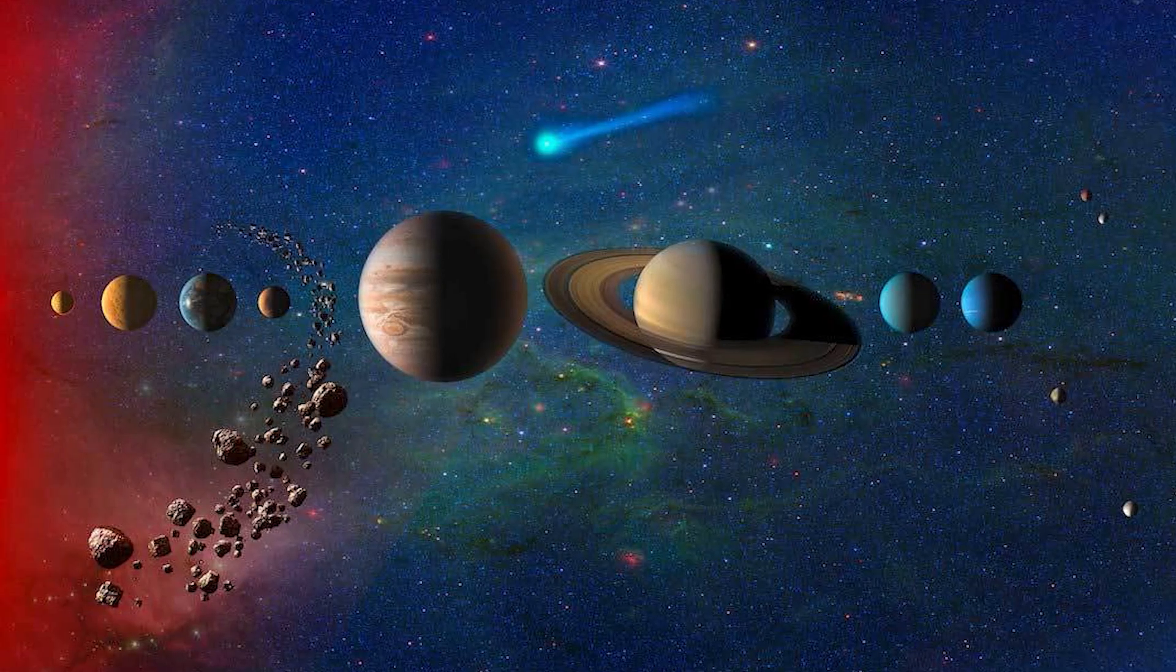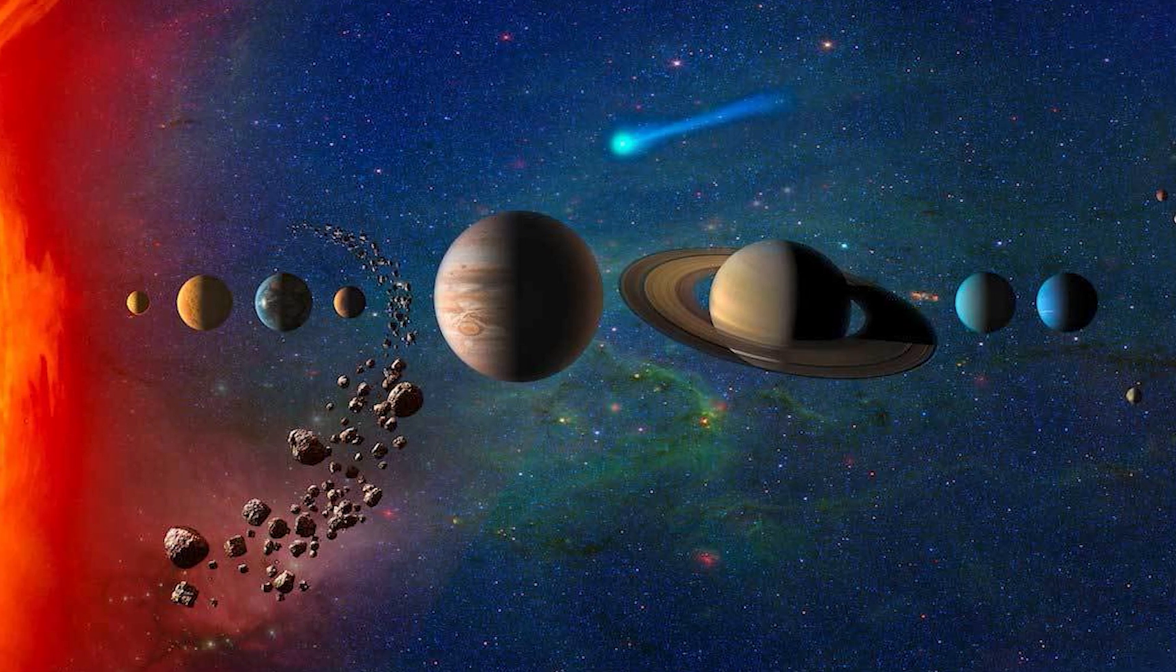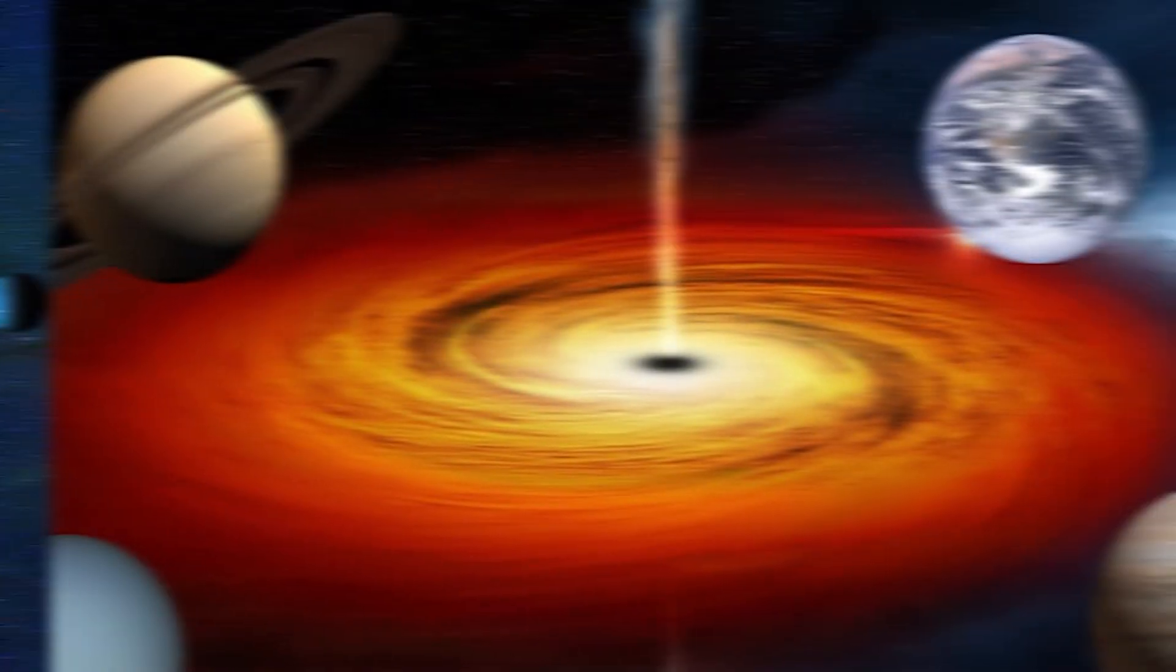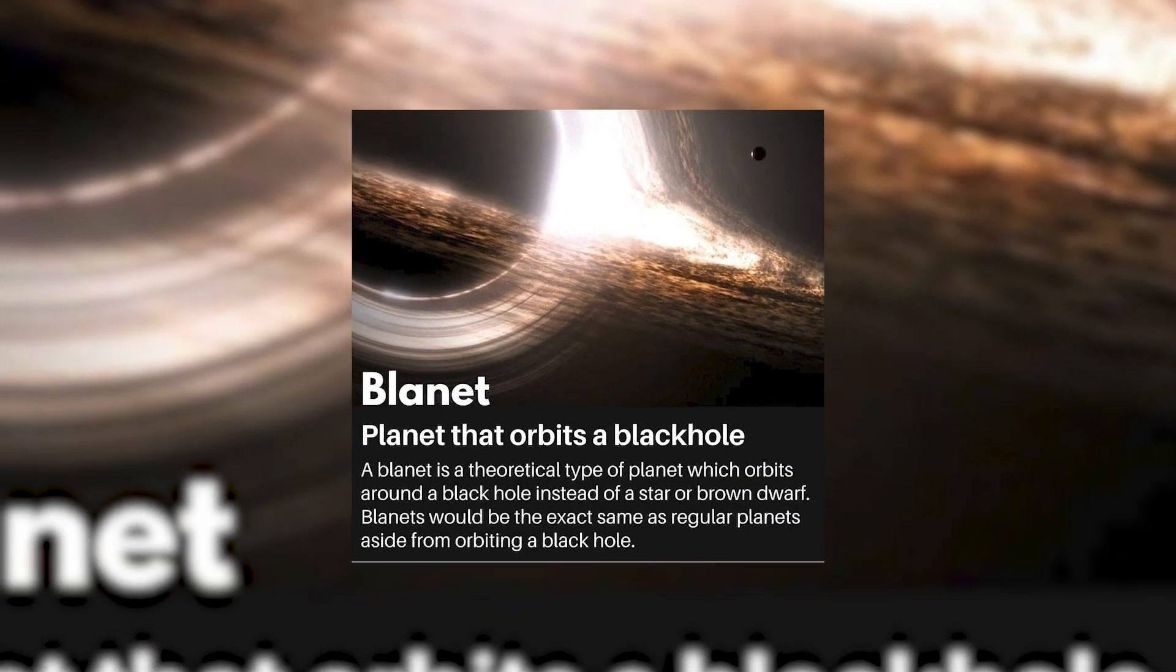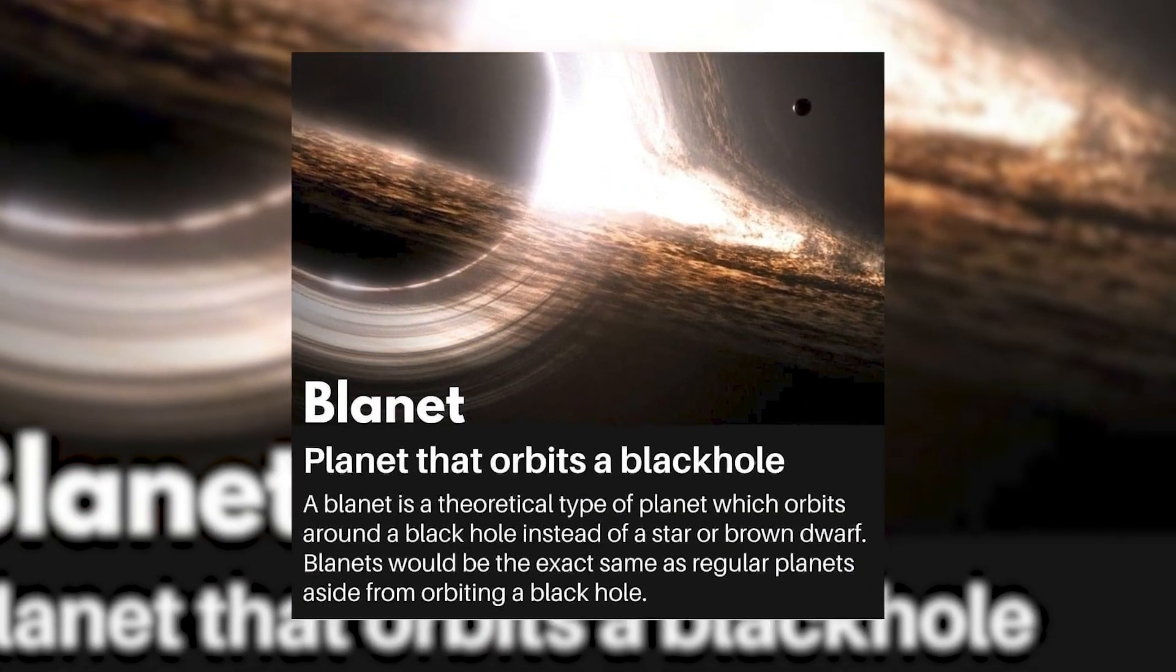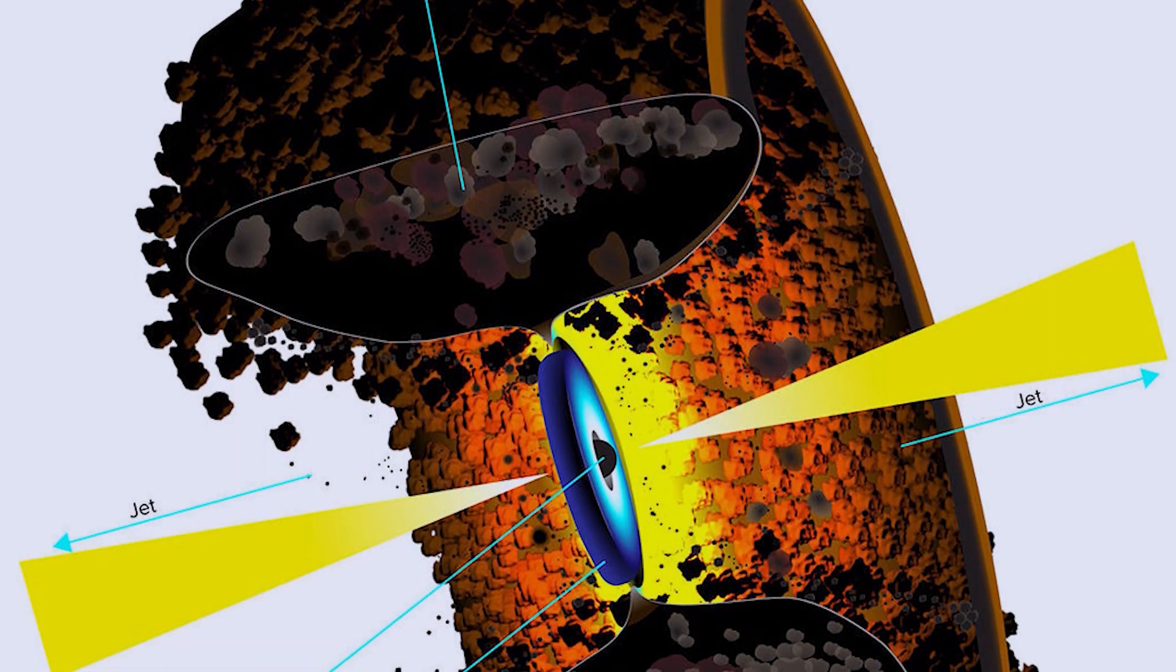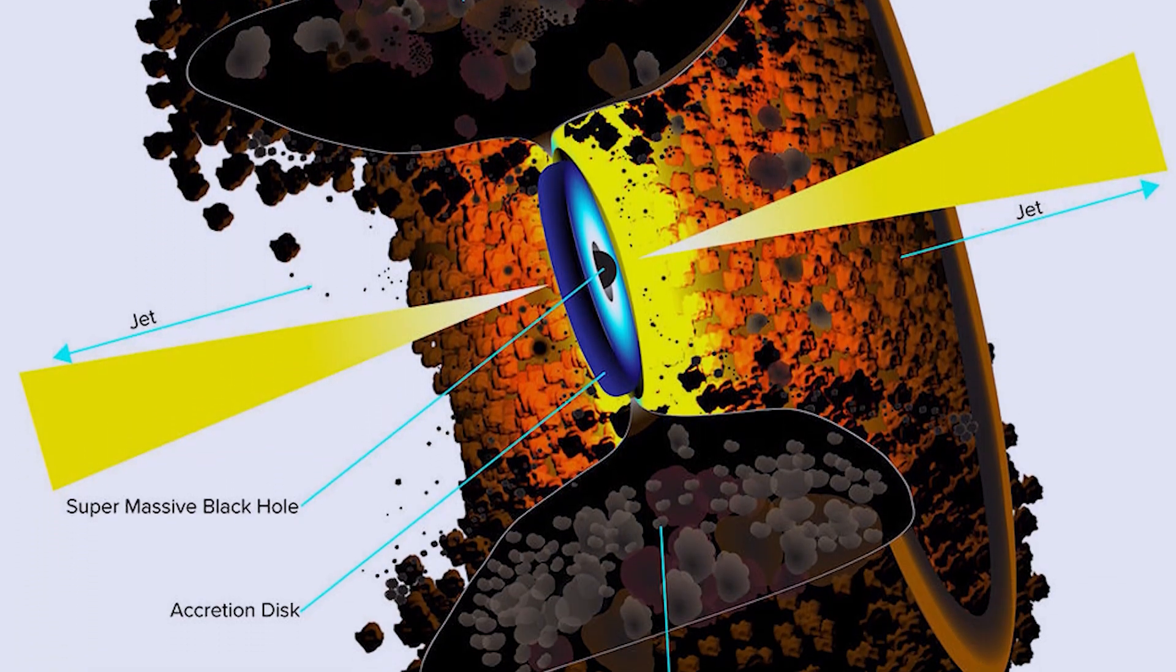Even among the weird planets we've found, there might be even stranger ones out there. Scientists have an idea about these things called planemos. They're just theories for now, but some scientists think they might be real. These unusual worlds could form when gas and dust crash together near black holes.